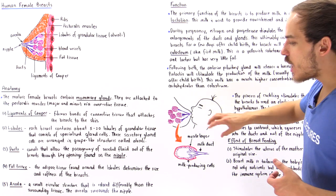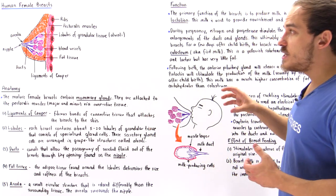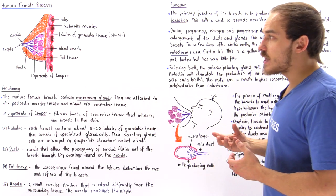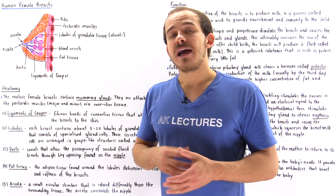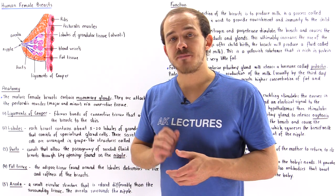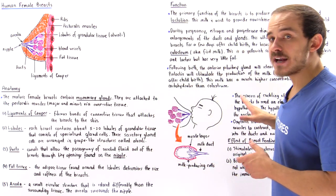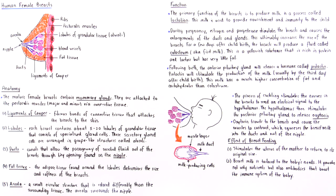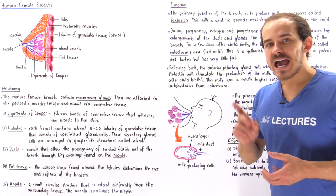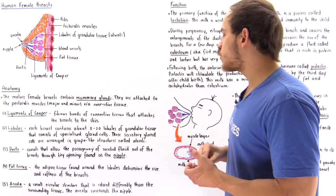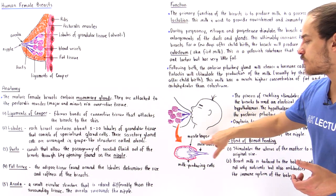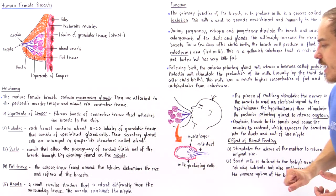When the child suckles on the nipple, the nerve cells in the nipple generate action potentials — electrical signals — that are carried to the hypothalamus of the mother's brain. The hypothalamus then stimulates the posterior pituitary gland to release a hormone known as oxytocin, which travels via the bloodstream and eventually reaches the muscle layer.